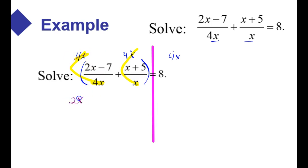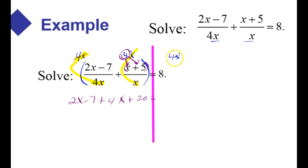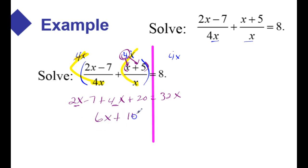What's left is just the 2x minus 7. But this 4 is left, so I have to distribute that to both terms in x plus 5, giving me 4x plus 20, leaving me with nothing canceling over here, so 32x. Notice I've cleared the denominators. Combining like terms: 6x plus 14 is equal to 32x.